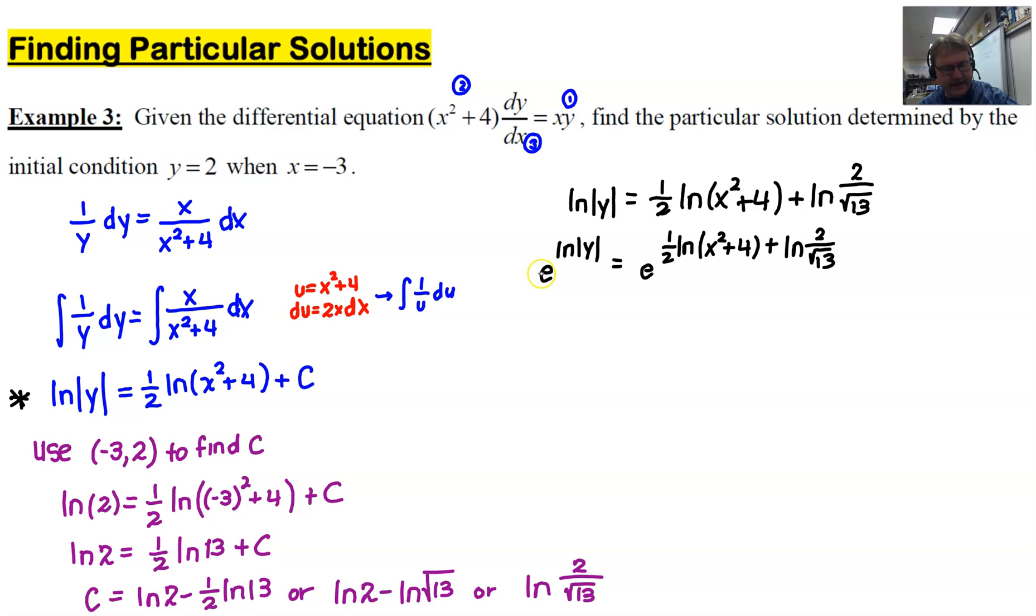We know that e and the natural log will cancel, and that will just give you the absolute value of y. But if you go back here and notice that your y was positive, then from that initial condition that creates this expression, our y is not going to run the risk of having that negative value. The vertical line test is going to help ensure that.